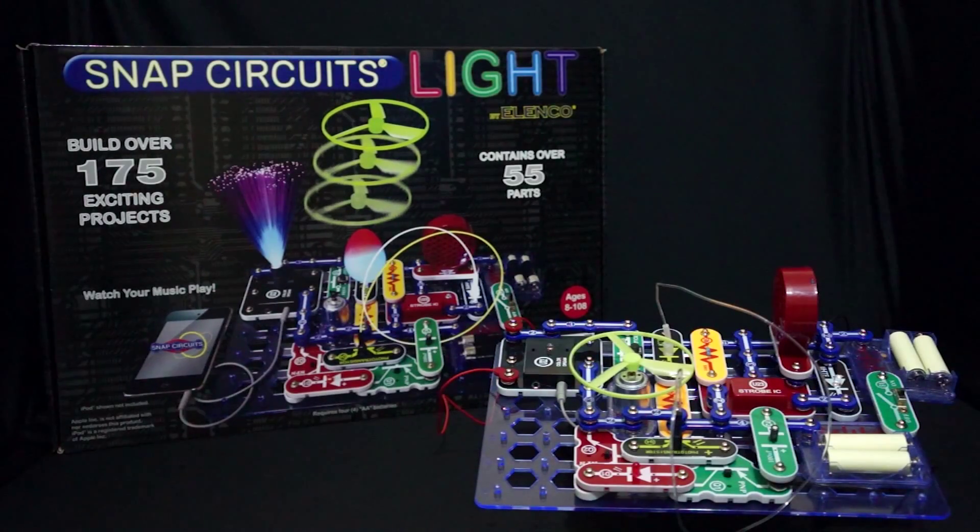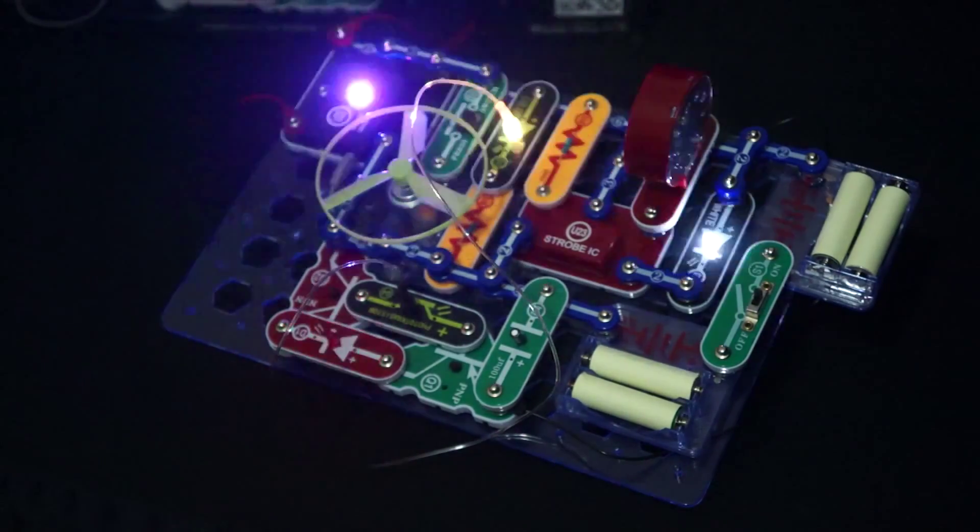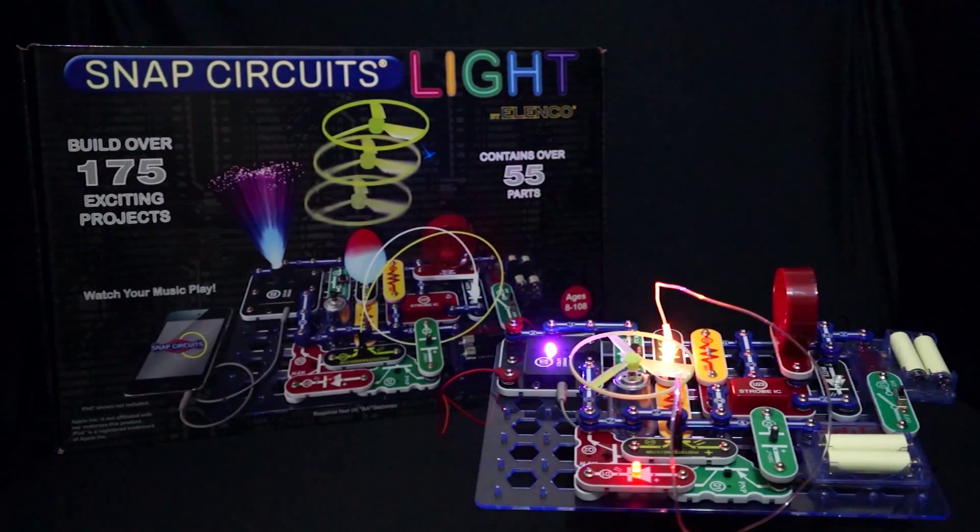Snap Circuits Light teaches the various ways that light can be used, like using fiber optics to match light, music and strobing lights. This set comes with over 175 projects and contains over 55 parts.